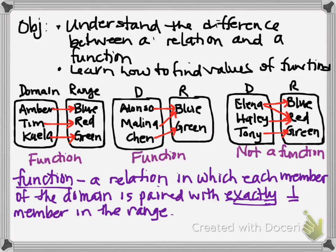So in that last example, Elena paired with two range numbers, not exactly one. So that's what took that third situation from being a function to just being a relation.